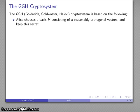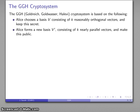First, Alice is going to choose a basis V consisting of k reasonably orthogonal vectors. This is going to be the secret basis. She's going to form a new basis V prime consisting of k nearly parallel vectors, and this is going to be the public basis.